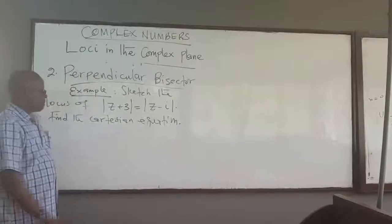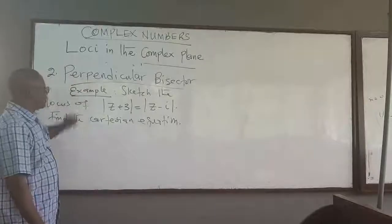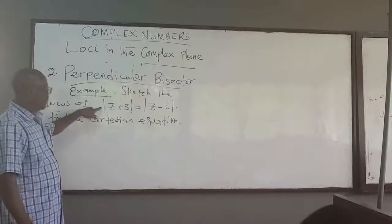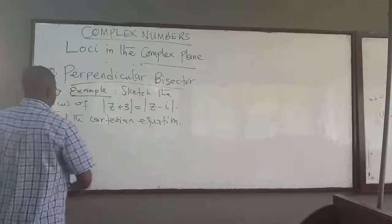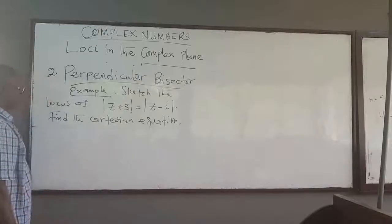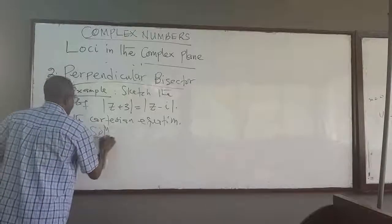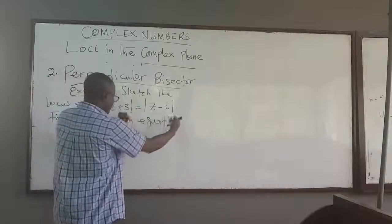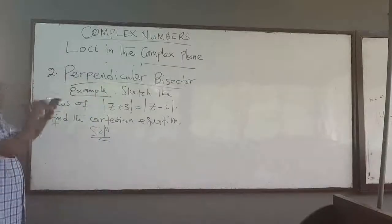Once again, let's continue with another example of the locus of points. In this case, we want to look at the perpendicular bisector. So here is one sketch that is the locus of this point. And then we want to find the Cartesian equation of the locus of points as well. As we did before, once you have absolute values because there are some complex numbers, you know there is going to be a perpendicular bisector that bisects a line connecting some two points.